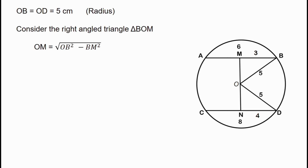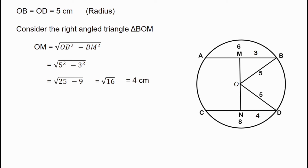Using the Pythagorean theorem: OM equals root of OB squared minus BM squared. Substituting, that is root of 5 squared minus 3 squared, which equals root of 25 minus 9, which equals root 16. Root 16 is equal to 4. So OM is equal to 4 cm.